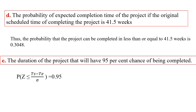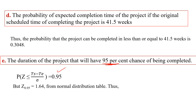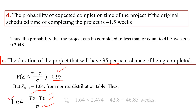Next, we determine the project duration that will have a 95% chance of being completed. P(Z ≤ (TES − TE) / sigma) = 0.95. From the standard normal distribution table, the Z value corresponding to 0.95 is 1.64, so D = 1.64. We know TE = 42.8, sigma = 2.4744, and D = 1.64. Substituting into D = (TES − TE) / sigma, we determine TES = 46.85 weeks.